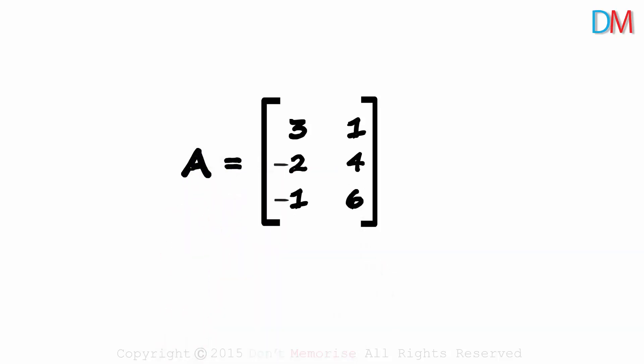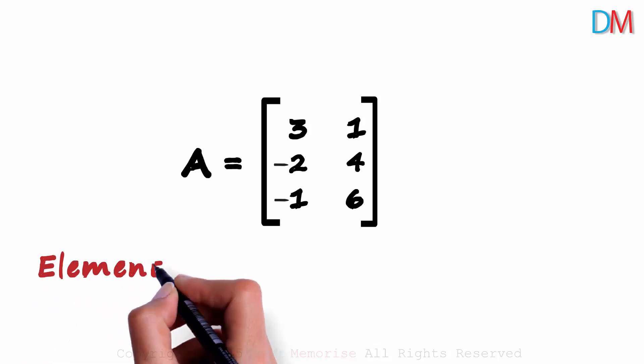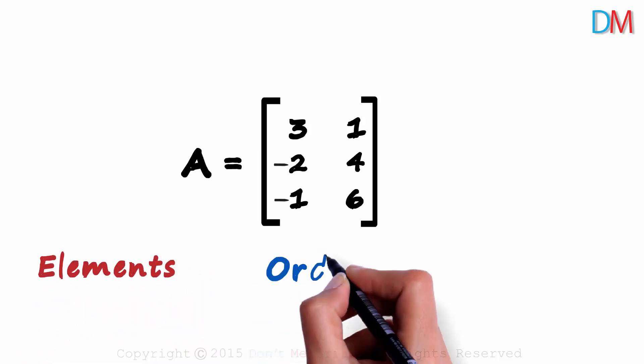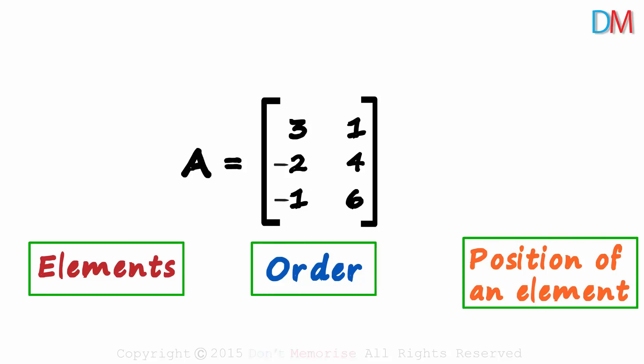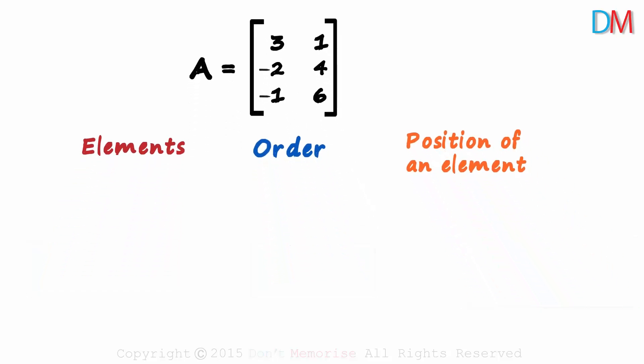Now there are a few super basic things we need to know about every matrix. Just three things. First, what are the elements in the matrix? Second, what is the order of the matrix? And third, what is the position of an element in the matrix? Just three things: elements, order, and position of every element. Let's zoom out and understand each of them in detail.